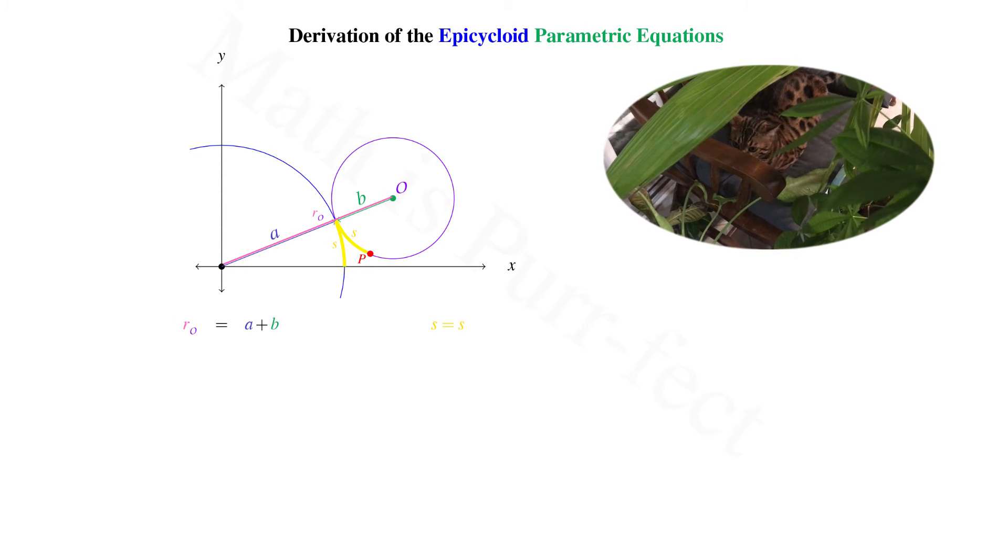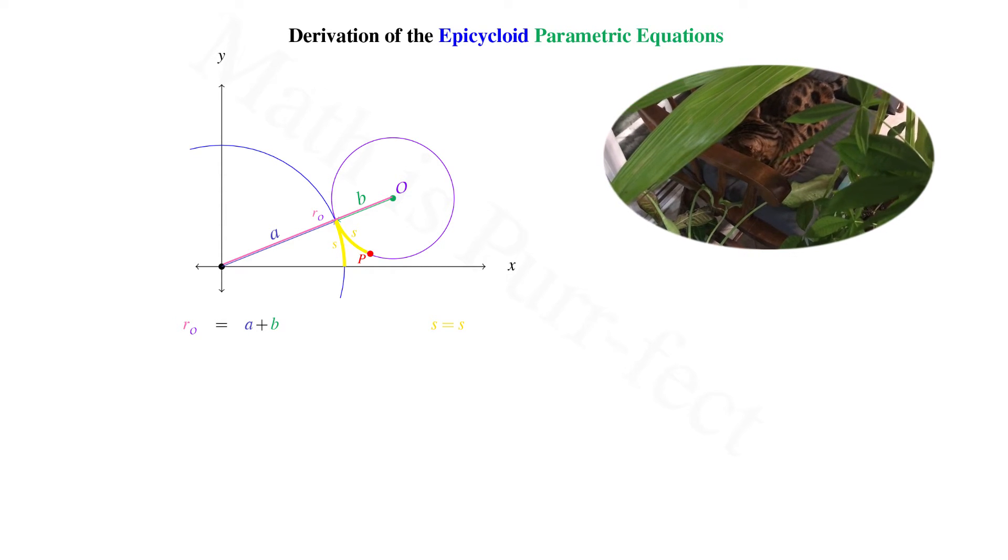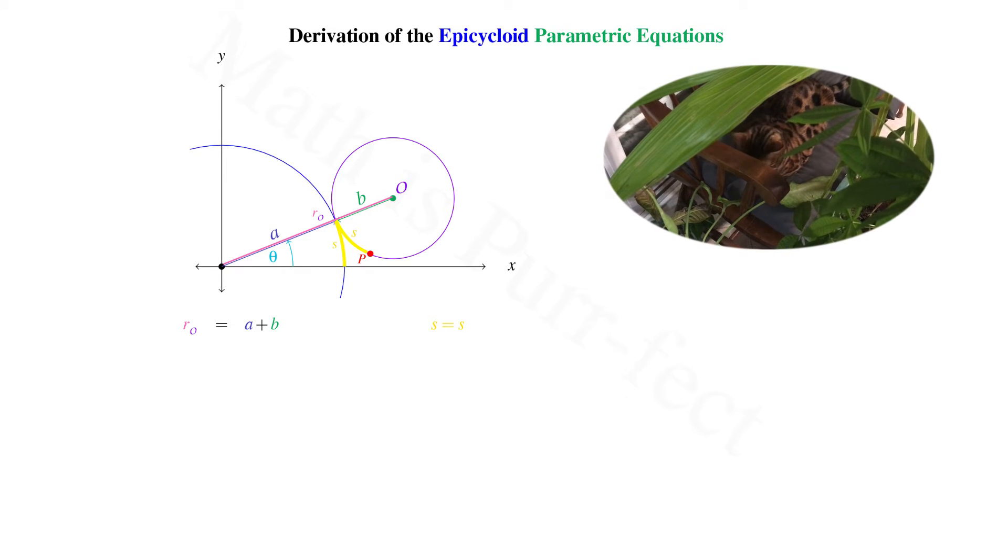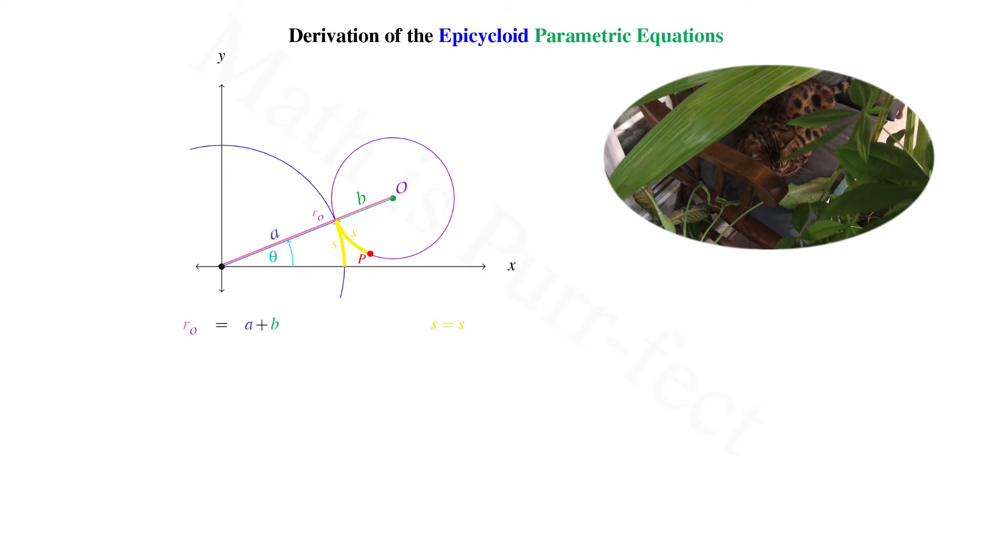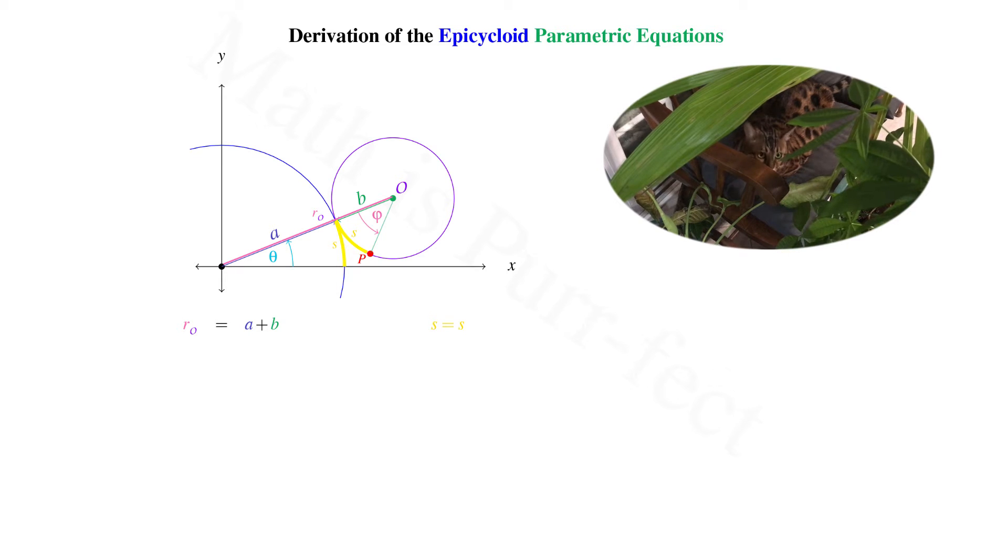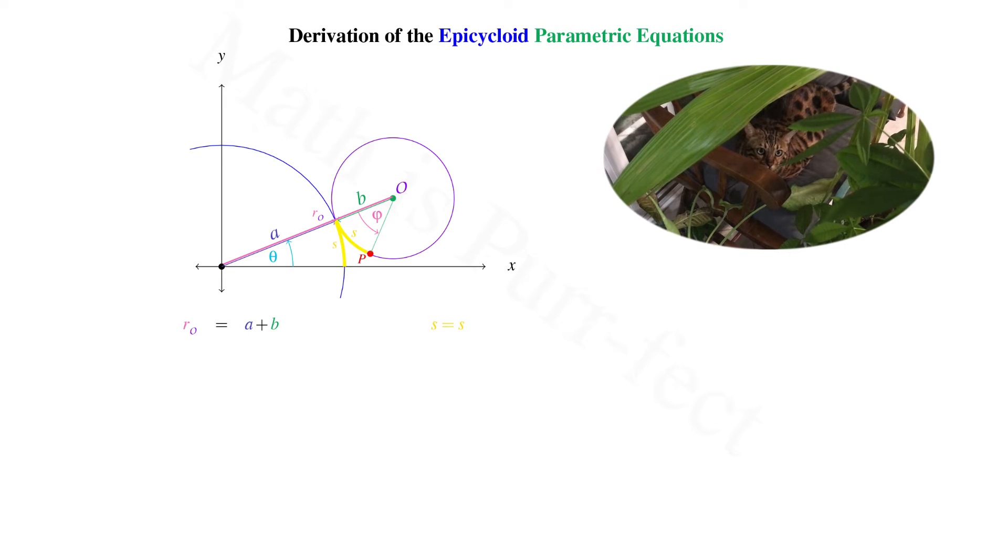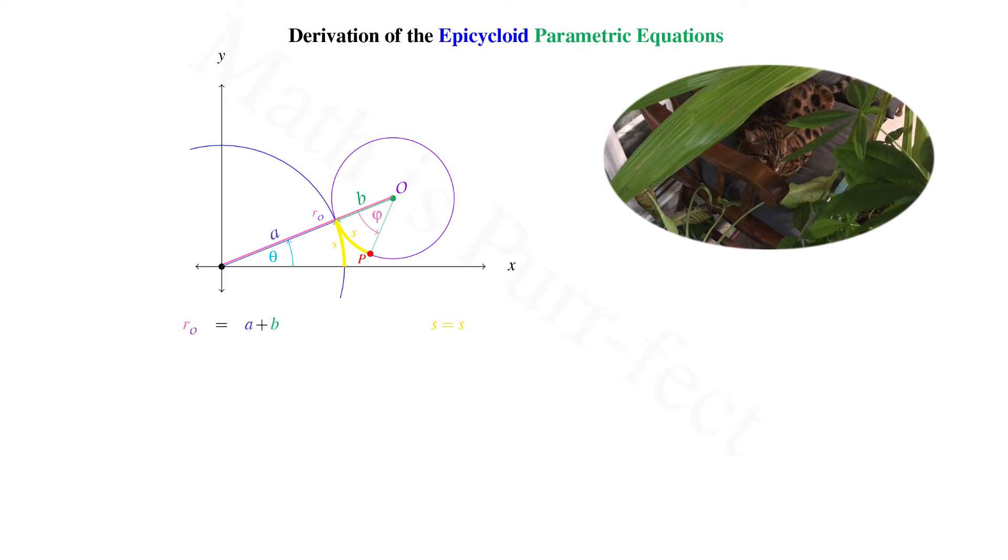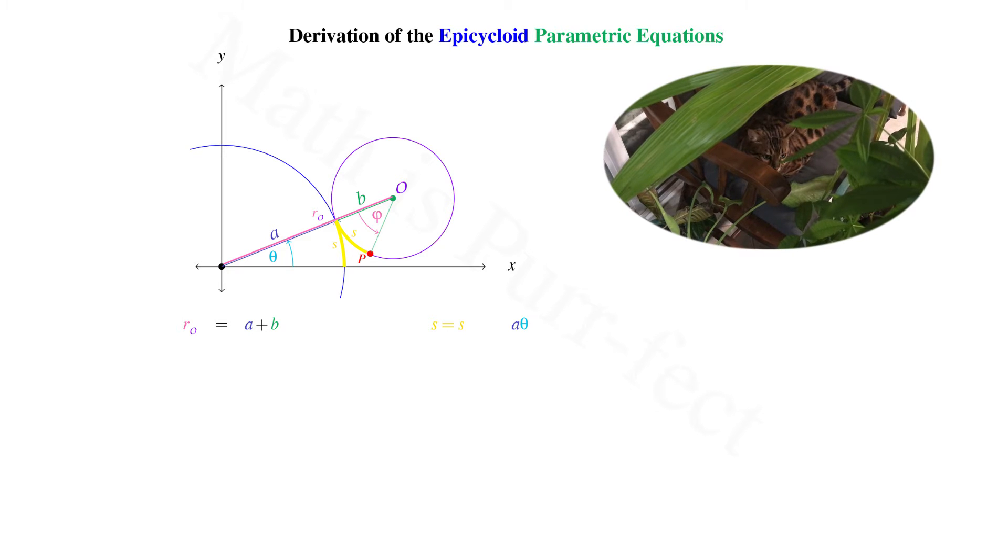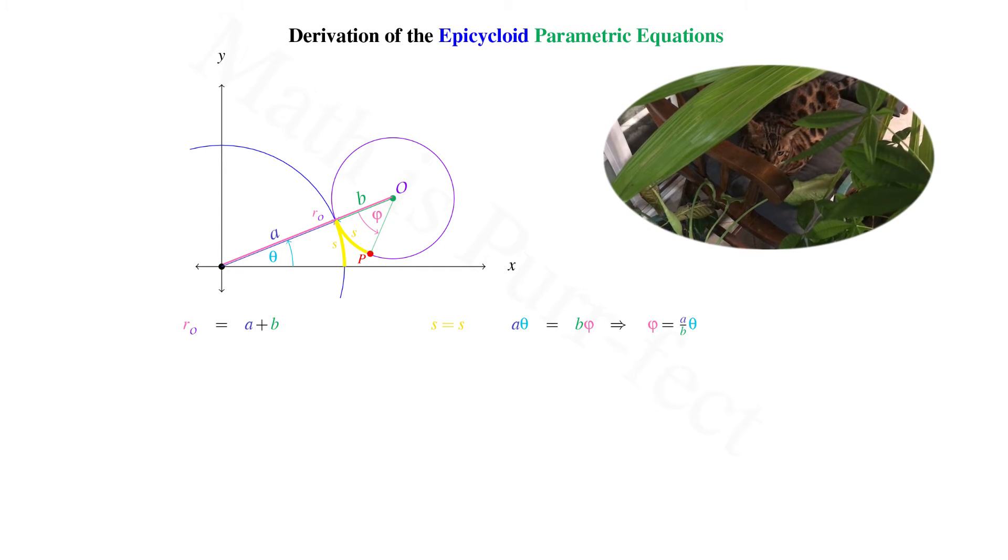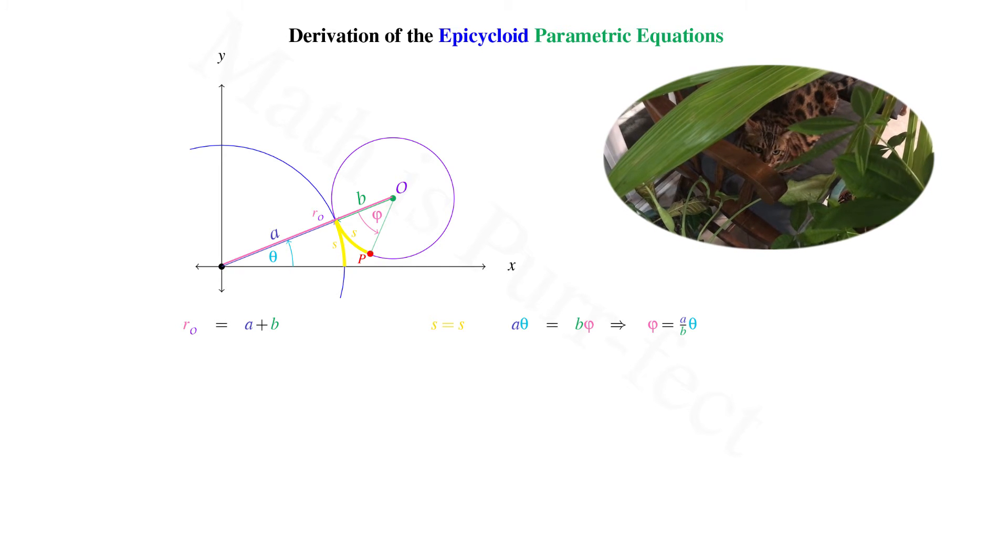Recall that arc length is given as radius times radian angle measure. Hence if radius A makes an angle theta with the positive x-axis, and the angle between vectors OP and R sub O is given as phi, we have that A theta must be equivalent to B times phi. This implies phi can be written as A over B times theta.